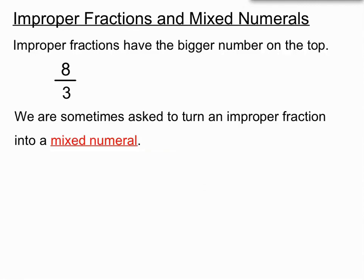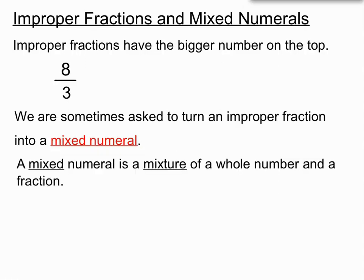And we're often asked in tests to turn an improper fraction into a mixed numeral. So what's a mixed numeral? Well, the name sort of gives a bit of a hint here. A mixed numeral is a mixture of a whole number and a fraction beside it. I'm sure you've seen plenty of these. So 2 is a whole number and 2 thirds is a fraction, but 2 and 2 thirds would be on the number line between 2 and 3.